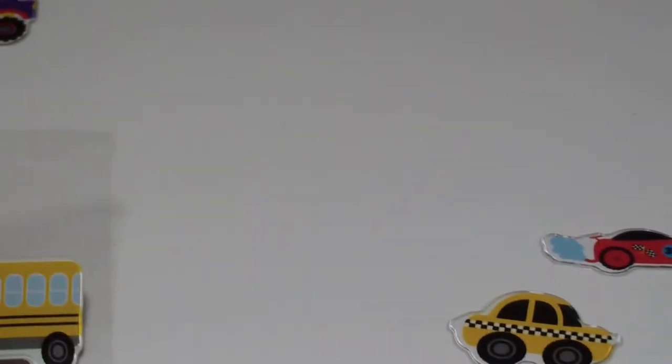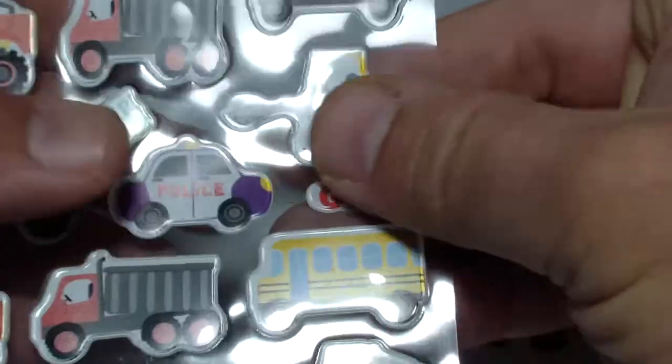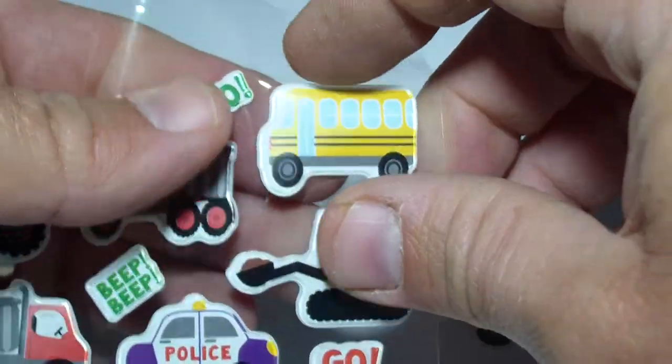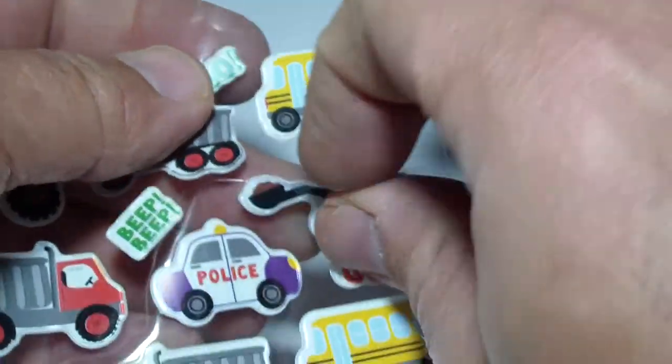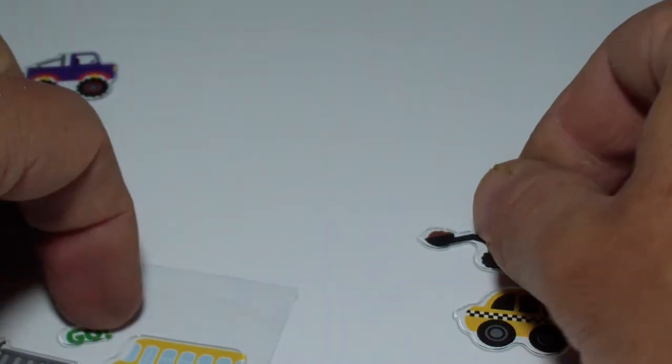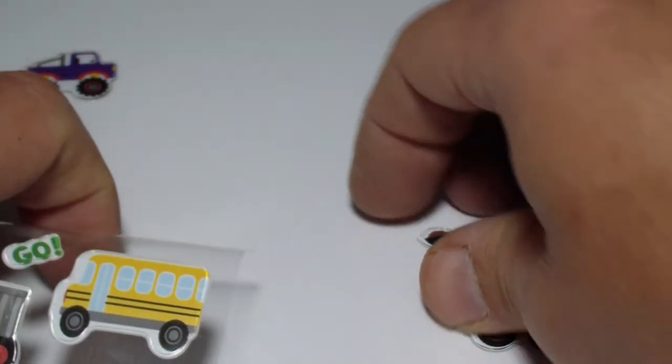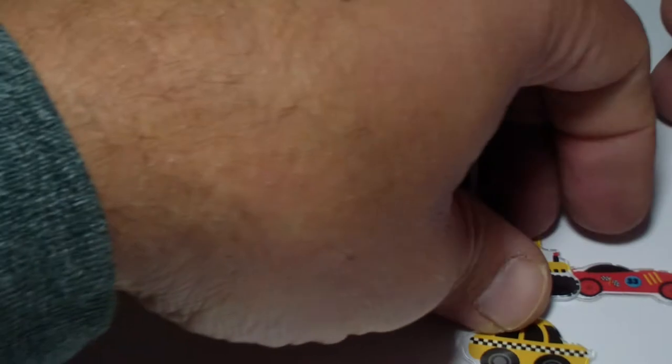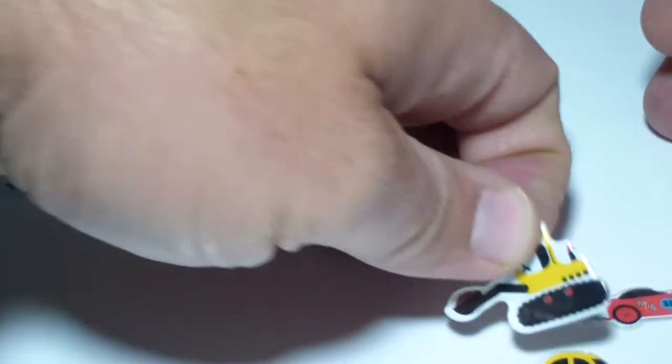This is it. And we have a skid steer, it looks like a skid steer, or an excavator. Oh no, that's right on top of the racing car. I don't want it on top. Let's take it out.